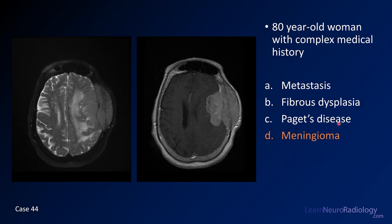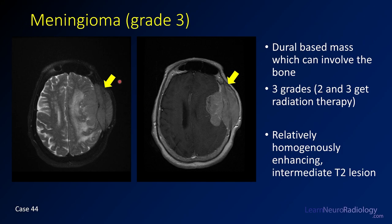This is a case of a meningioma. What you have is a mass that appears centered in the bone with a significant extradural component, a little CSF cleft around it, and a significant extracalvarial component. There is some destruction of the bone, but some of the underlying matrix remains — that's relatively uncommon for metastatic disease. When you see that, the three things in your differential should be meningioma, myeloma, and lymphoma.